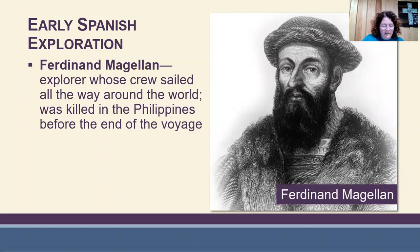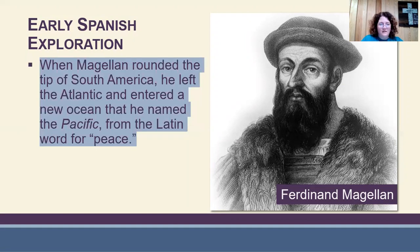By 1519, Ferdinand Magellan sailed west from Spain in an effort to sail around the world. His ships rounded the tip of South America and crossed the Pacific Ocean. Tragically, Magellan was killed in the Philippines. The surviving members of his crew continued the voyage and returned to Spain. This journey lasted three years, but it proved that Columbus's theory was correct — it was possible to reach the east by sailing west. When Magellan rounded the tip of South America, he left the Atlantic and entered a new ocean that he named the Pacific, from the Latin word for peace.